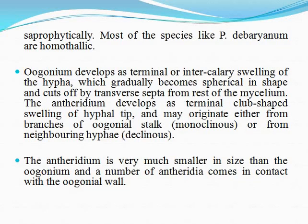In most species, such as Pythium debaryanum, the oogonium develops as a terminal or intercalary swelling of the hyphae, which gradually becomes spherical in shape and is cut off by a transverse septum from the rest of the mycelium. The antheridium develops as a terminal, club-shaped swelling of the hyphae and may originate either from branches of oogonial stalks or from neighboring hyphae. The antheridium is very much smaller in size than the oogonium.